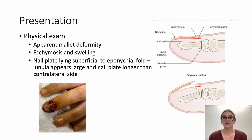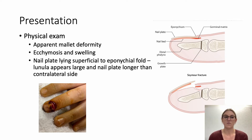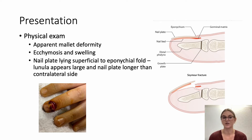In terms of presentation, these injuries will often appear as a mallet deformity and can be missed or misdiagnosed as such. Characteristically, there will be a significant amount of ecchymosis and swelling. You may notice the nail plate lying superficial to the eponychial fold, with the lunula appearing large and possibly longer than the nail plate on the contralateral uninjured side.